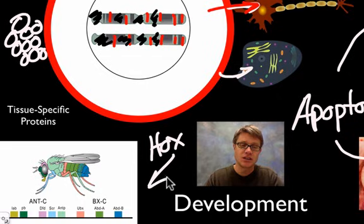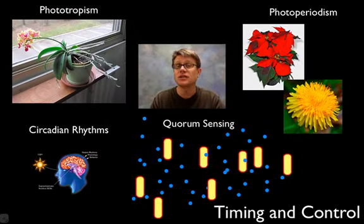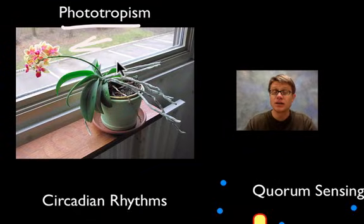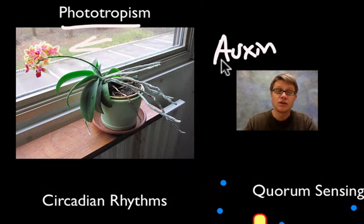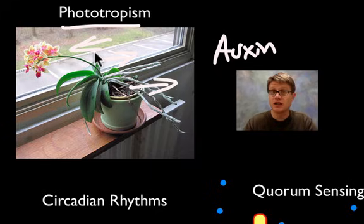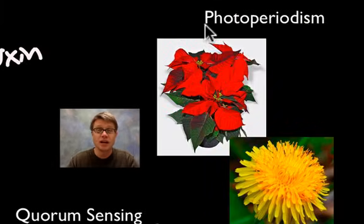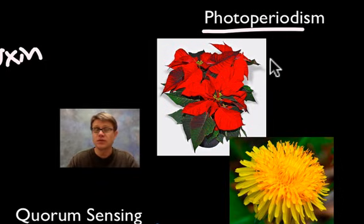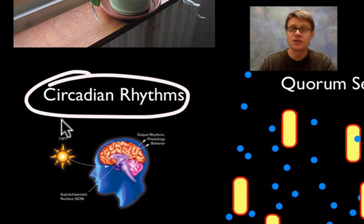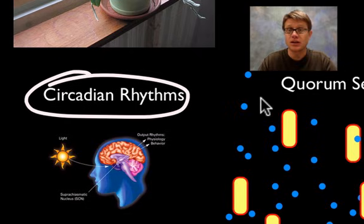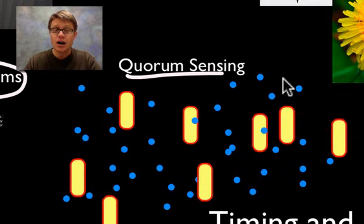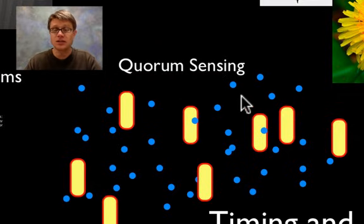Hox genes put body parts in the right spot, and the Hox genes found in fruit flies, mice, and humans are essentially the same — suggesting they're homologous. Plants sense their environment through phototropism: auxin moves away from the light in the stem, causing cells on the dark side to elongate, bending the plant toward light. Photoperiodism uses phytochromes to measure night length and determine the season. Animals use circadian rhythms — the pineal gland secreting melatonin — to tell what time of day it is. Bacteria use quorum sensing to respond to each other and make sense of their environment.